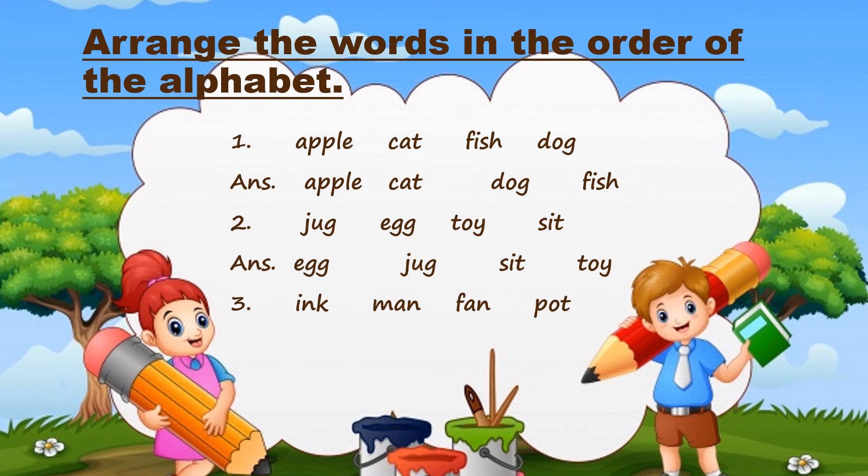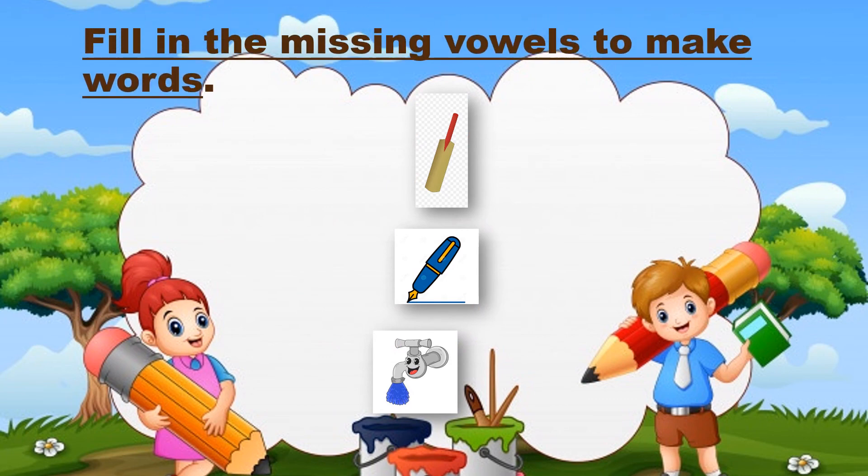Let us arrange in the alphabetical order. Number 2: P dash N. Number 3: T dash B. So, tell me the answer for Number 1. It is B A T, bat. Yes. What is the answer for Number 2? P E N, pen. The alphabet E is missing. Number 3 answer is T A B, tab.